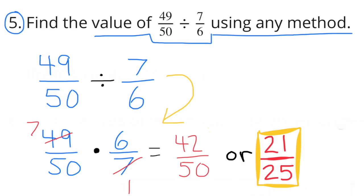Number 5: Find the value of 49 fiftieths divided by 7 sixths. Use any method. We can find this value by multiplying by the reciprocal of 7 sixths. So 49 fiftieths times 6 sevenths equals 42 fiftieths, or 21 twenty-fifths.